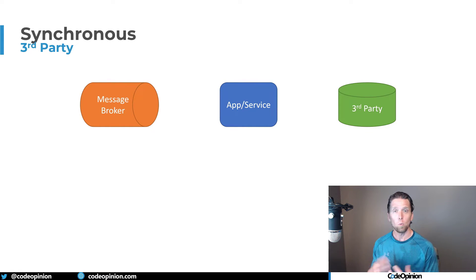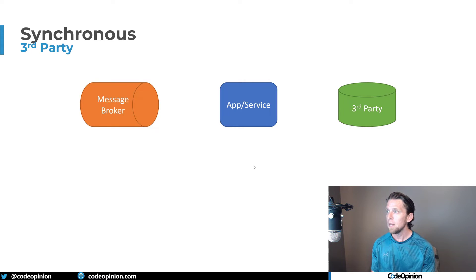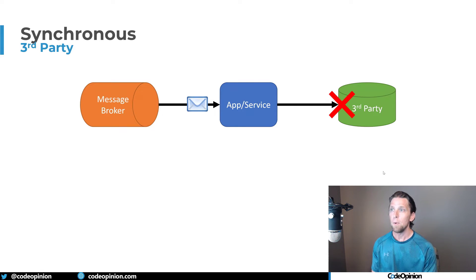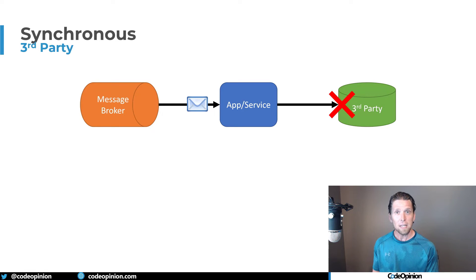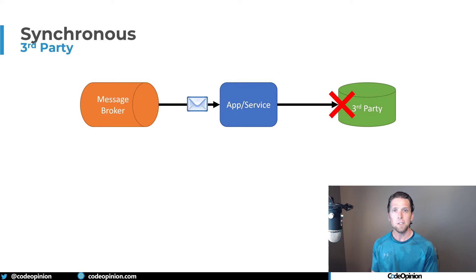This is very different if the originating request is coming from a message broker rather than a client UI. If a message broker sends our service a message and we need to interact with that third-party service but it's unavailable, we can retry with exponential backoffs. And if it's still failing, we don't need to return an error to the client — because we have no client. Our client is technically the message broker. We can retry later, put the message in a dead letter queue, and from the end user's perspective nothing really failed because they weren't aware we were even processing the message.